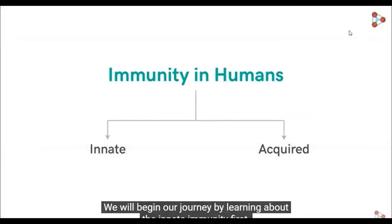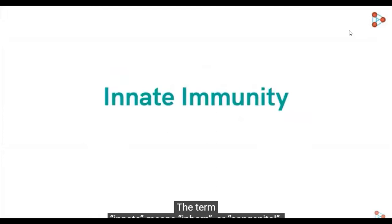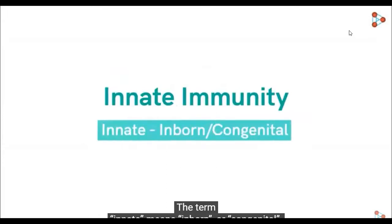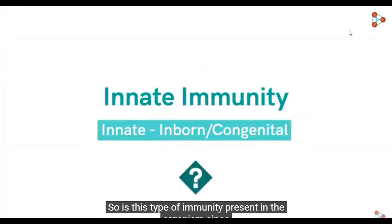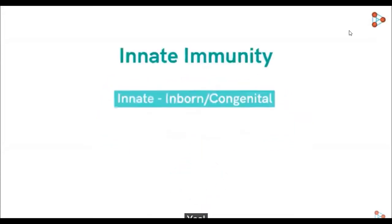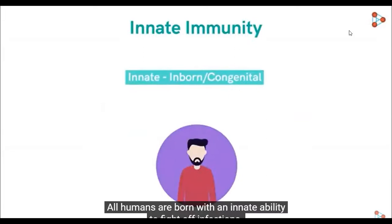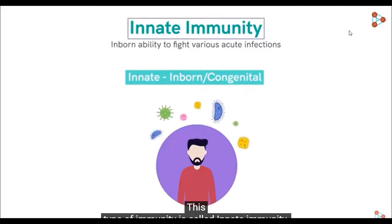Let's get into the details of these types now. We will begin our journey by learning about innate immunity first. The term innate means inborn or congenital — that is, innate here stands for being present since birth. So this type of immunity is present in the organism since birth. All humans are born with an innate ability to fight off infections. This type of immunity is called innate immunity.